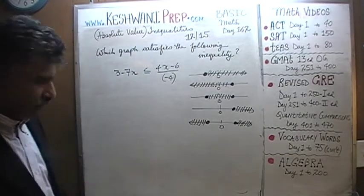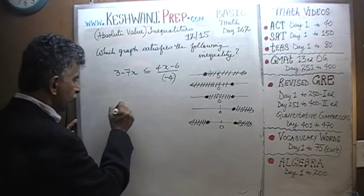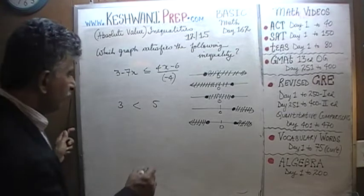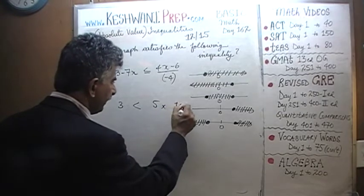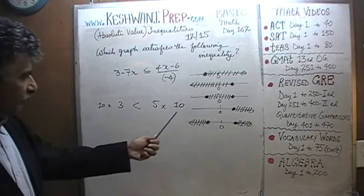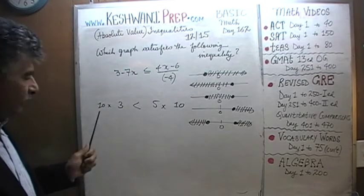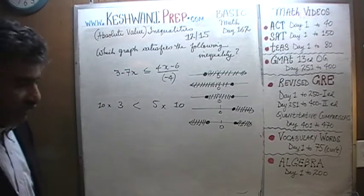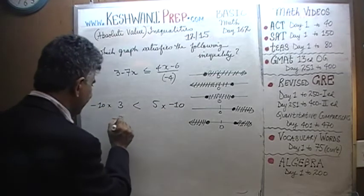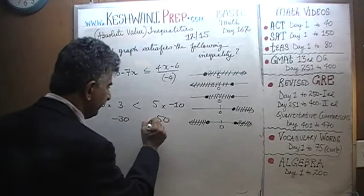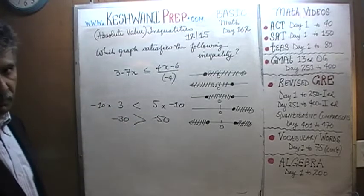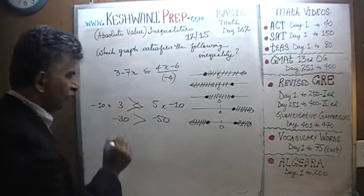For example, would you agree that three is less than five? Of course. If you multiply both sides of the inequality by ten, that is still true. But if instead of multiplying by positive ten you multiply by negative ten, then negative thirty and negative fifty — negative thirty is now greater than negative fifty. The direction has to be switched.